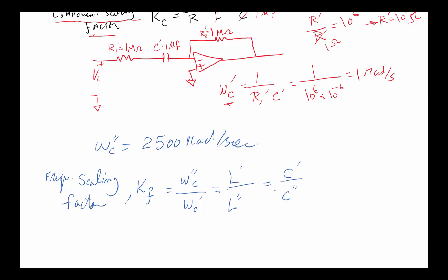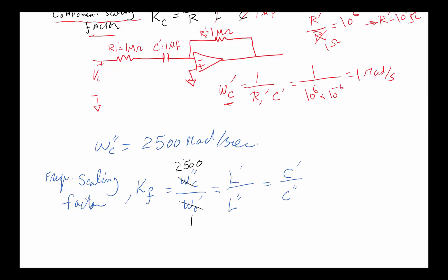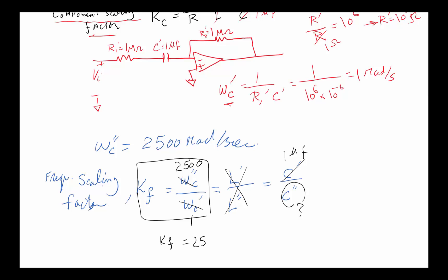We know the old frequency was one radian per second and the new frequency we want is 2,500. We don't have inductors so we don't need to worry about that. The old capacitor is one microfarad and we need to find the new one. From the ratio, K_F equals 2,500. That means one microfarad over the new capacitor equals 2,500, so the new capacitor must be one divided by 2,500 microfarads.